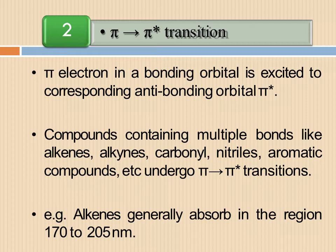The next is pi to pi star transition. Pi electron in a bonding orbital is excited to corresponding anti-bonding orbital pi star. Compounds containing multiple bonds like alkenes, alkynes, carbonyl, nitriles, aromatic compounds undergo pi to pi star transitions. For example, alkenes generally absorb in the region 170 to 205 nm. In ethylene, lambda max is 180 nanometer for pi to pi star transition.